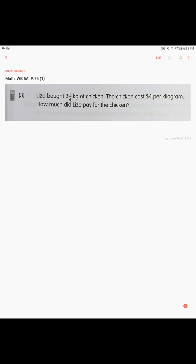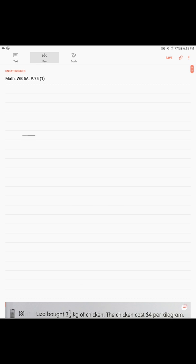All right, next page, page 75. Lisa bought three and one-fourth kilograms of chicken. The chicken cost four dollars per kilogram. How much did Lisa pay for the chicken? So we have chicken, three and one over four kilograms, and each kilogram costs us four dollars. This is what we do: multiplication. If you do your math, it's gonna be thirteen dollars. That's your answer: Lisa paid thirteen dollars for the chicken.